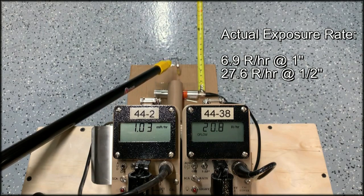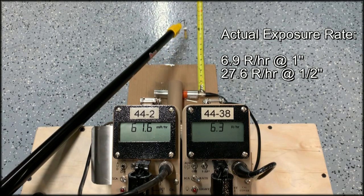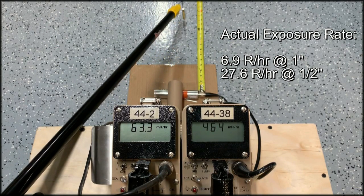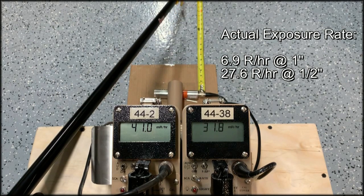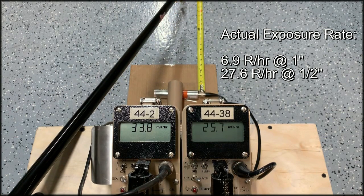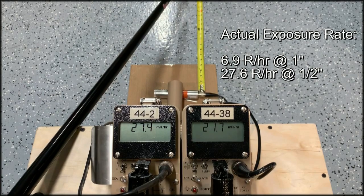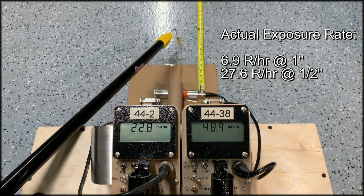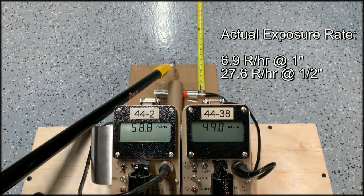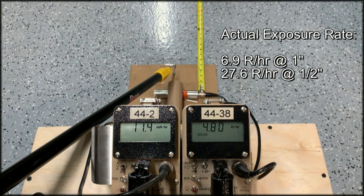And the actual dose rate's going to be different because similar to the 44-2, the 44-38 also has an upper limit. And with dead time correction, that's about 500 mR per hour. So it's really only under reporting what the actual dose rate is as well.